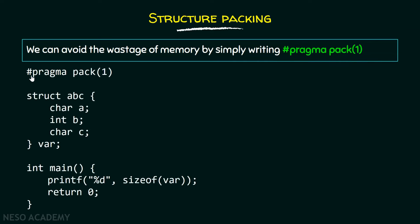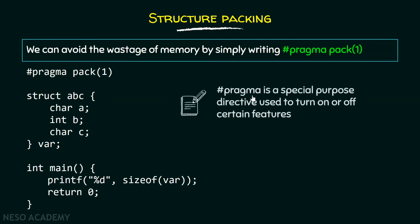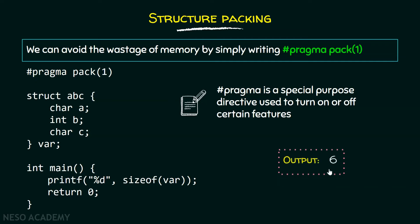We can avoid the wastage of memory by simply writing #pragma pack(1) at the top of the structure. #pragma is a special purpose directive used to turn on or off certain features. Here we are switching on the feature of packing. With the help of #pragma pack(1), we are switching this feature on, which means the output of this program will be 6 bytes instead of 12 bytes — no padding is applied.